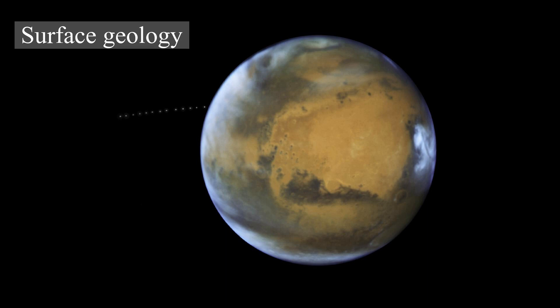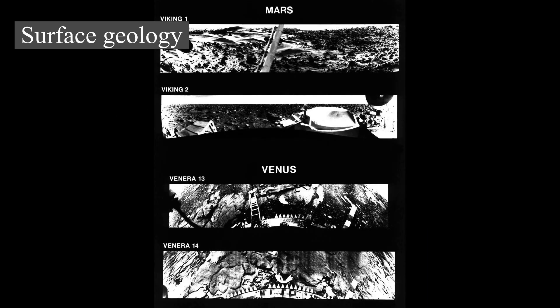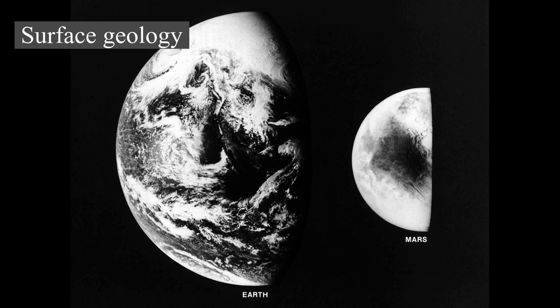Scientists have theorized that during the solar system's formation, Mars was created as the result of a random process of runaway accretion of material from the protoplanetary disk that orbited the Sun. Mars has many distinctive chemical features caused by its position in the solar system. Elements with comparatively low boiling points, such as chlorine, phosphorus, and sulfur, are much more common on Mars than on Earth. These elements were probably pushed outward by the young Sun's energetic solar wind. About sixty percent of the surface of Mars shows a record of impacts from the late heavy bombardment.